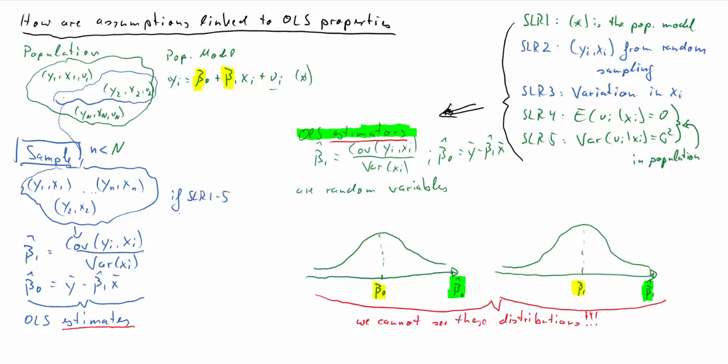So if assumptions 1 to 5 hold, then our calculated OLS estimates, beta 1 hat and beta 0 hat, are draws from these distributions of our OLS estimators. Imagine you roll a dice and you see a 6. That is one draw from a uniform distribution of all possible values from 1 to 6. But you only see one draw. And that's the same here. Once you have the data, we see one value for the beta 0 hat and beta 1 hat. And they are drawn from this distribution. Now, what do we know about this distribution? And that's the important thing. And that's what can be derived from the assumptions.